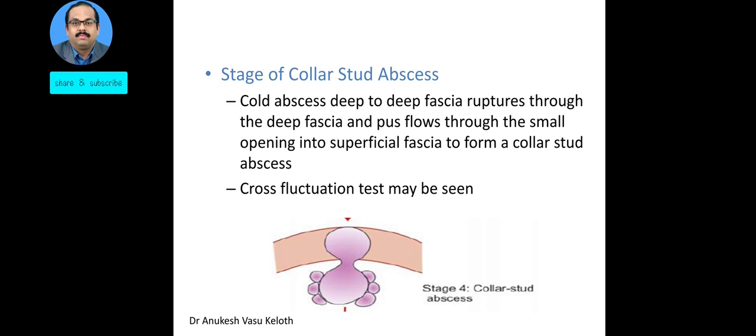This is followed by the stage of collar stud abscess. The cold abscess, which is deep to the deep fascia, eventually ruptures through the deep fascia and the pus flows through a small opening into the superficial fascia to form a collar stud abscess. There is now a collection both superficial and deep to the deep fascia, giving it a dumbbell shape. In certain areas, cross-fluctuation can be easily demonstrated.